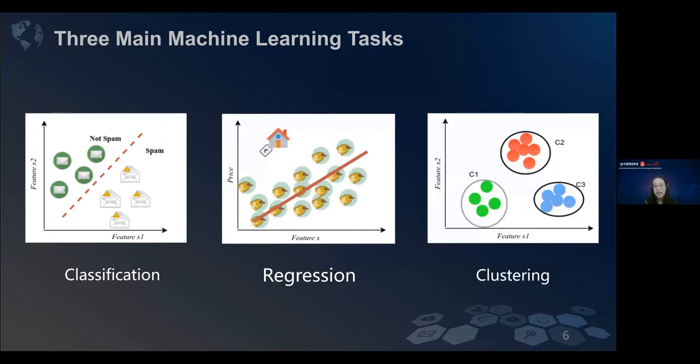Clustering, the only unsupervised task, tries to group the data based on their similarities. They try to make sure the objects in the same group have the highest similarities.